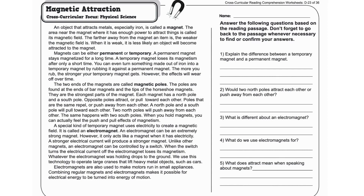When you hold magnets, you can actually feel the push and pull effects of magnetism. A special kind of temporary magnet uses electricity to create a magnetic field. It is called an electromagnet. An electromagnet can be an extremely strong magnet.